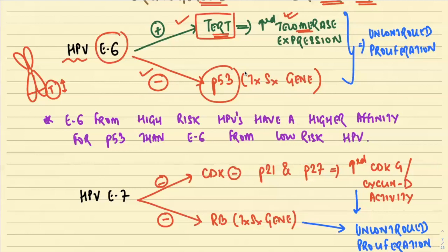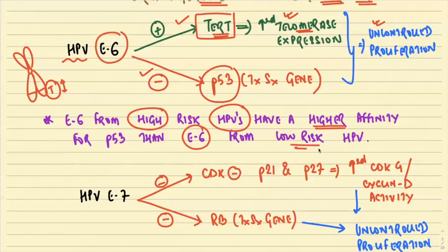Both effects of E6 lead to uncontrolled cell proliferation. Importantly, E6 from a high-risk HPV has a much higher affinity for P53 than E6 from a low-risk HPV. So E6 from high-risk HPV causes more uncontrolled proliferation than E6 from low-risk HPV.